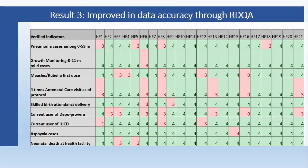Result number three: there was improving data accuracy through RDQA — Routine Data Quality Assessment. When we conducted this assessment, we verified different indicators in 21 health facilities and the data was corrected on the basis of these findings. As you can see, there are many cells highlighted in pink — these are the data which needed to be corrected, and it was corrected from the health facility level.